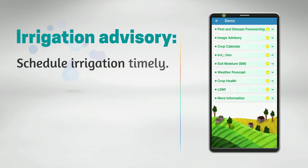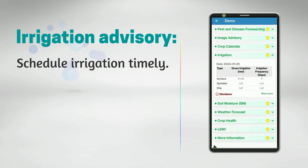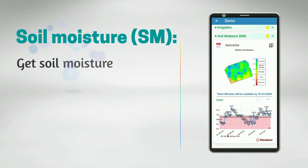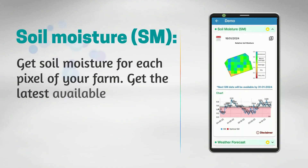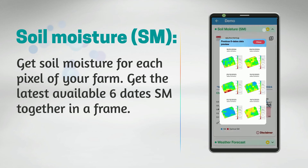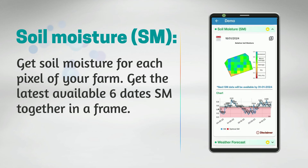Irrigation Advisory: All irrigation techniques will have information available, including surface, sprinkler, and drip irrigation. Soil Moisture: It indicates relative soil moisture in color grids. You can click on the top right corner to see the previous 6 dates of soil moisture for your farm.